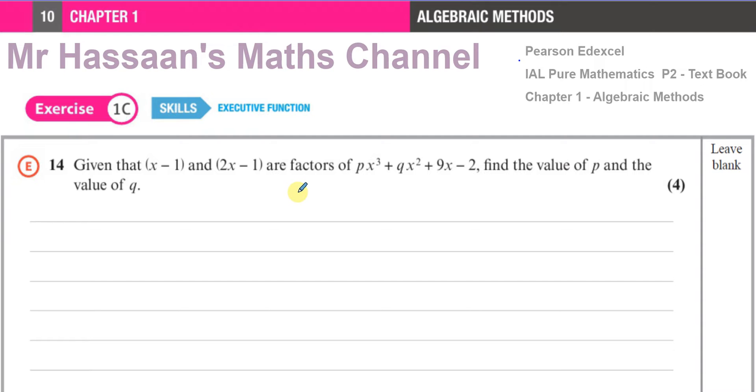So if the remainder is 0, then using the remainder theorem, substituting the value that makes these brackets 0 into this expression will give you 0 as the output. If I call the equation f(x), then we can say let f(x) equal this expression they gave us: f(x) = px³ + qx² + 9x - 2.